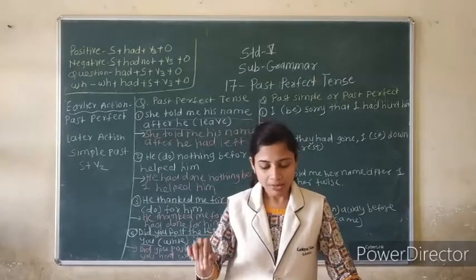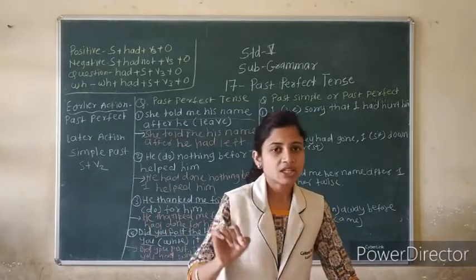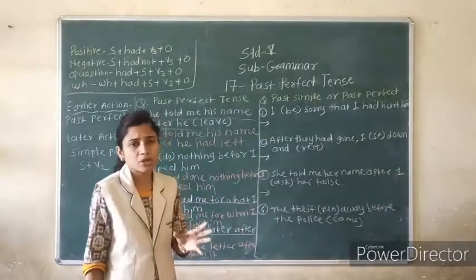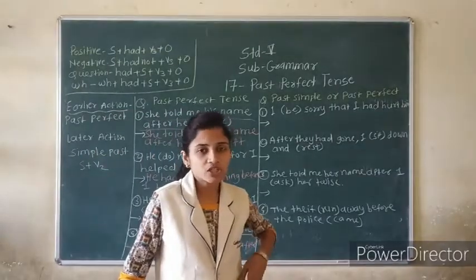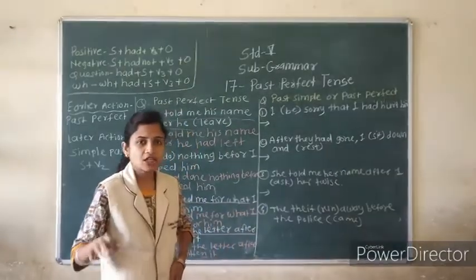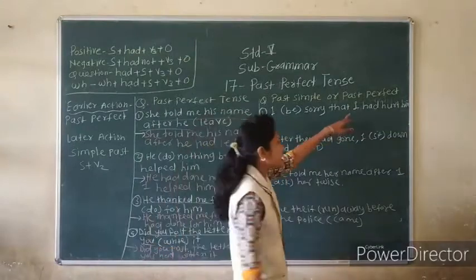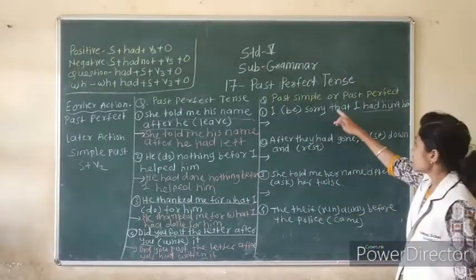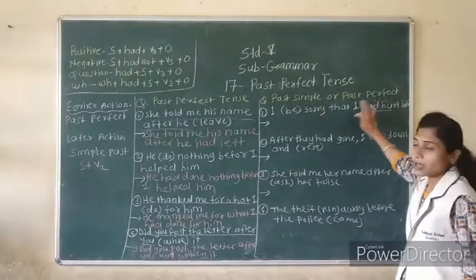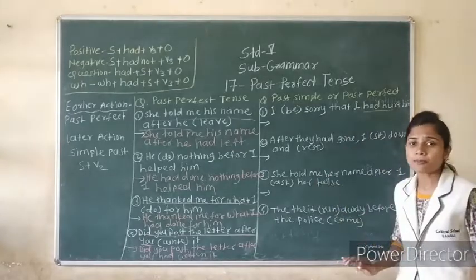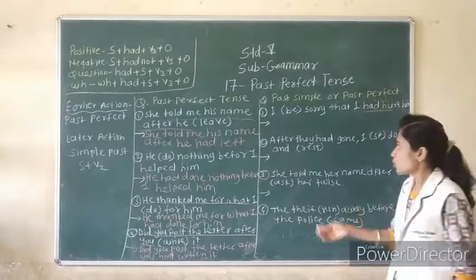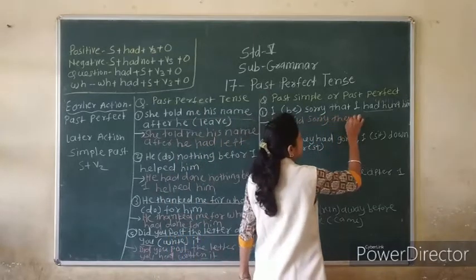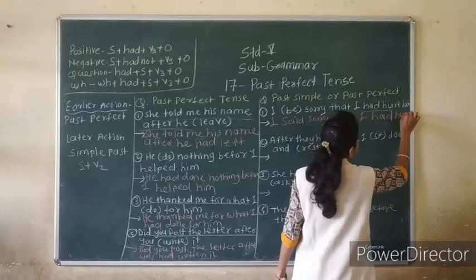First question: 'I (be)... sorry, that I had heard him.' Here 'had' is already given — that means Past Perfect is already used. So what you use is Simple Past. For Simple Past, use verb 2. So: 'I said sorry that I had heard him.' Said — verb 2.